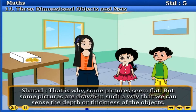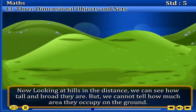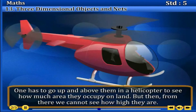Sharad said, 'That is why some pictures seem flat, but some pictures are drawn in such a way that we can sense the depth or thickness of the objects. Now, looking at hills in the distance, we can see how tall and broad they are, but we cannot tell how much area they occupy on the ground.'